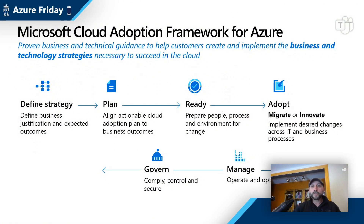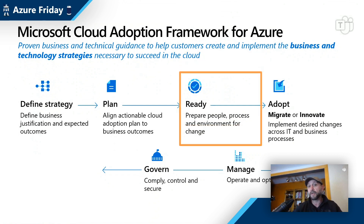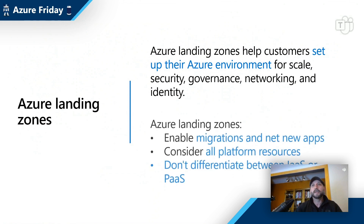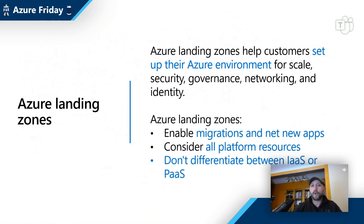In the last sessions on the Cloud Adoption Framework, we've talked about things like governance. Readiness comes a little bit earlier and is more about getting ready to migrate or innovate in the cloud. In the Ready methodology, we talk about environmental readiness. If you do this right, then governance and management aren't as hard, nor is adoption, migration, or innovation. An Azure landing zone gives the customer scale, security, governance, networking, and identity — so whether they're doing a migration or something new, all those platform resources are there. It doesn't matter if you're IaaS or PaaS; teams can make those decisions on their own.